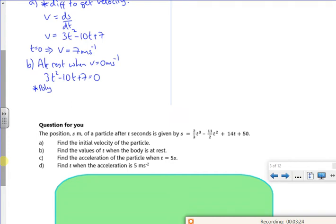So if I use poly, it gives me t is 1, or t is 7 thirds of a second. So that's part b.